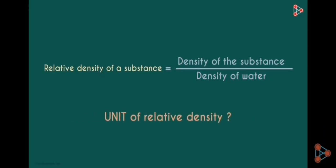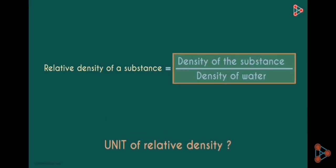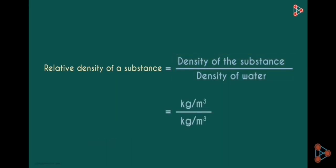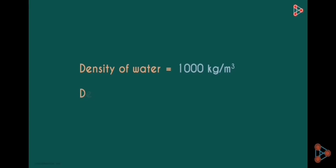Can you tell me the unit of relative density? Look at the right-hand side and tell me the unit. As it is a ratio of similar quantities, relative density will have no units — the units from the numerator and denominator cancel each other out. The density of water is 1000 kg per m³ and the density of silver is 10,500 kg per m³.